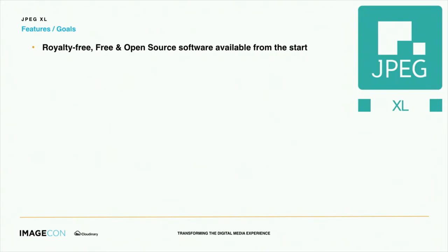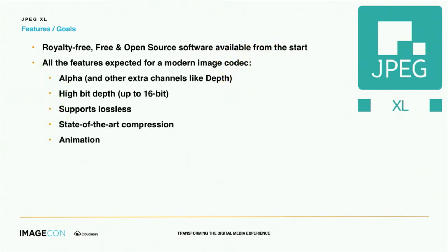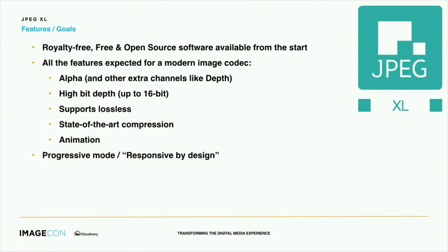Obviously we want all the features people expect from a modern image codec: we need to support transparency, encode depth channels and other kinds of extra channels, handle high bit depth, do lossless, have state-of-the-art lossy compression, and support some kind of animation so that we can at least get rid of GIF. We also want to have a progressive mode, and I will go into more detail about this in a minute.